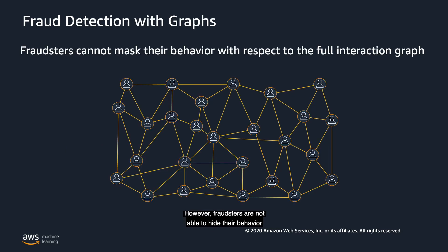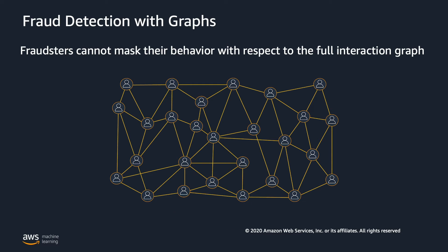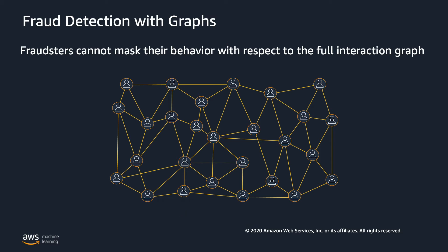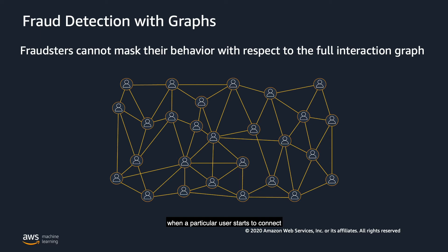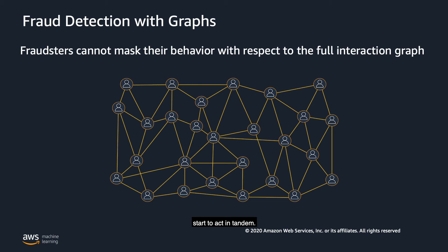However, fraudsters are not able to hide their behavior with respect to the full interaction graph. For example, fraudulent accounts that are often connected to other objects can be indicative of guilt by association. We can also combine weak signals from individual nodes to derive stronger signals about the behavior of that node. Fraud detection with graphs is strong because we can detect patterns like node aggregation, when a particular user starts to connect with many other users or entities, and activity aggregation, when a bunch of suspicious accounts start to act in tandem.